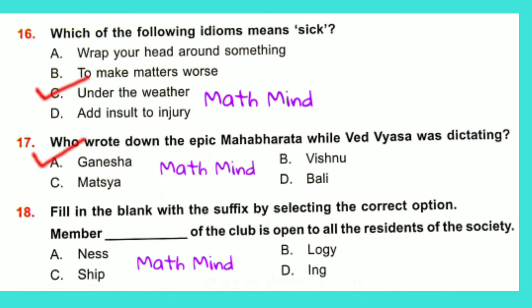Question No. 18: Fill in the blank with the suffix by selecting the correct option. 'Member dash of the club is open to all the residents of the society.' Option C is correct: Membership. It means to be a member of a group.